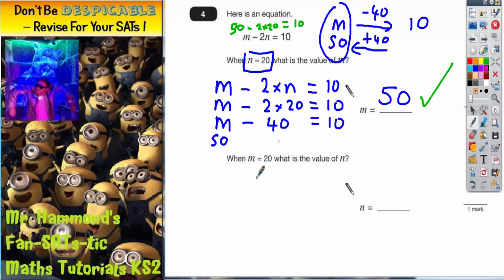For the second part of the question, this time we're told that m equals 20 and we've got to find the value of n. So we start by writing out the original equation again: m take away 2 lots of n equals 10, and we're told that m is worth 20.